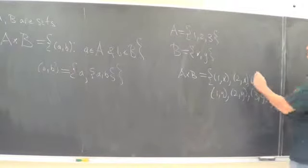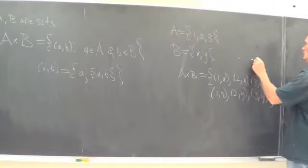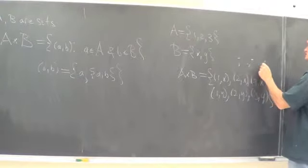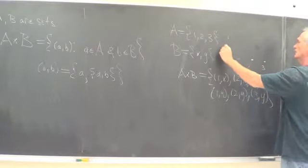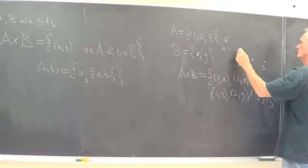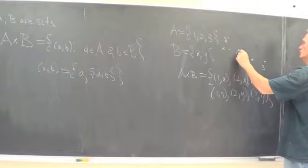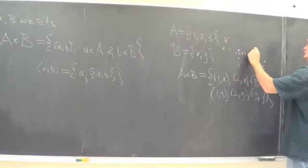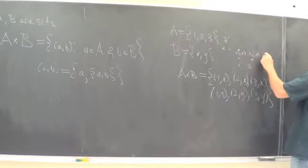And more explicitly, if we think about 1, 2, 3 as living along the horizon, and X and Y as living along the vertical, and our ordered pairs 1X, 2X, 3X,